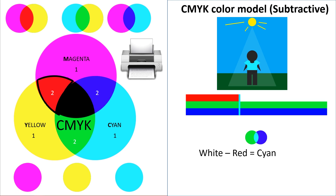This will be our last example: a cyan shirt, which is opposite red. And so cyan subtracts red, and we're left with blue and green, which combine to make cyan. Alrighty, and that'll do it for this video. If you have any questions, feel free to leave them in the comments below. Thanks for watching, see ya.